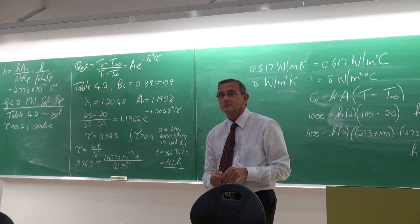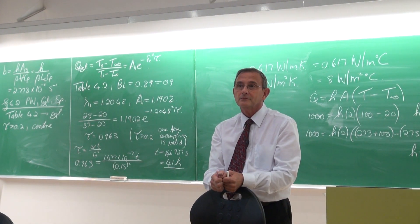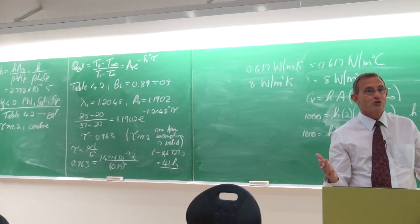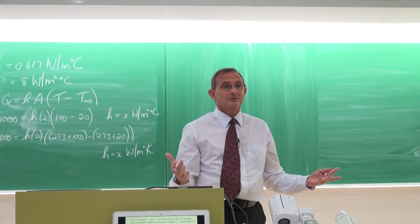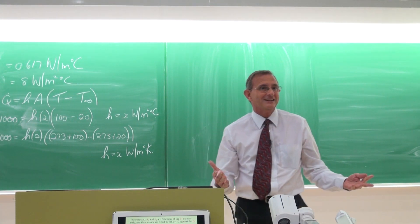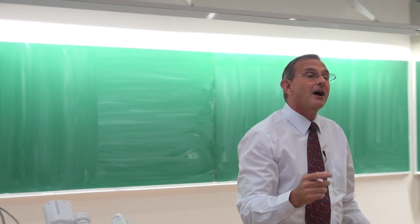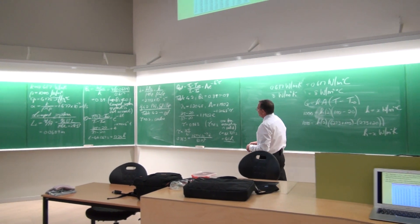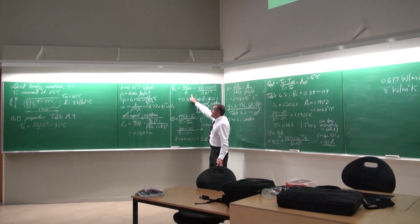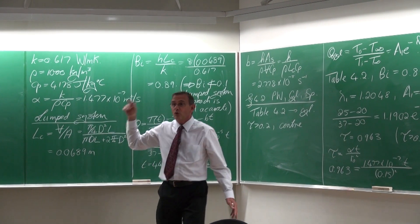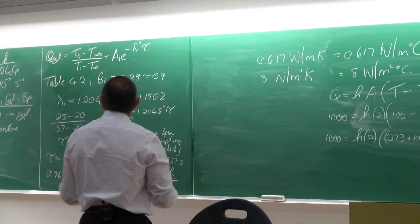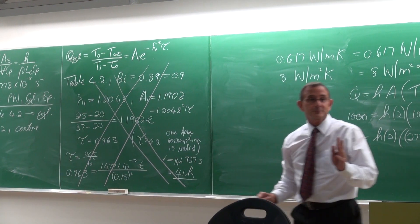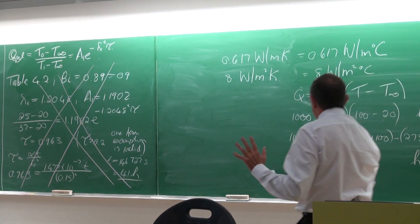Are you happy with that? No — it's all wrong! I let you into a trap. The trap is that the Biot number we calculated was based on the characteristic length, which is only valid for the lump system approach. So the Biot number of 0.89 was incorrect for use in table 4.2.